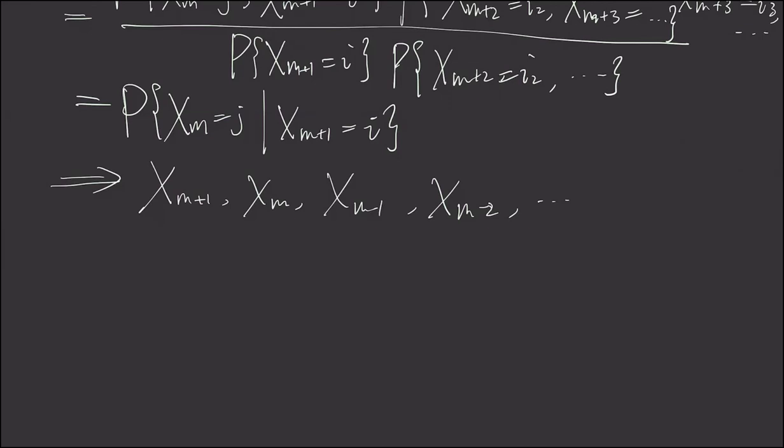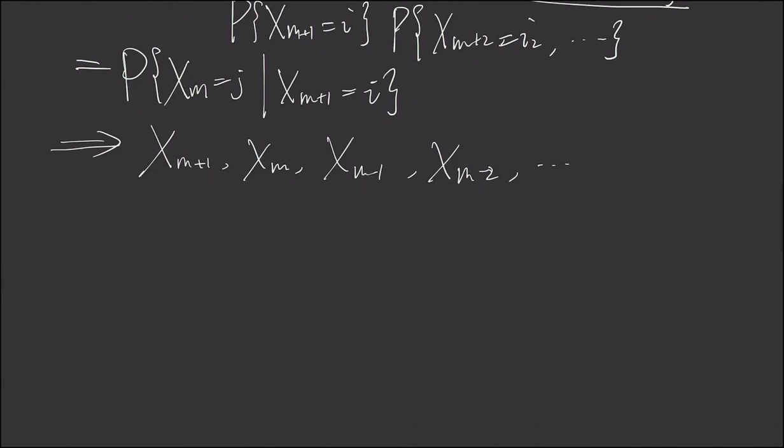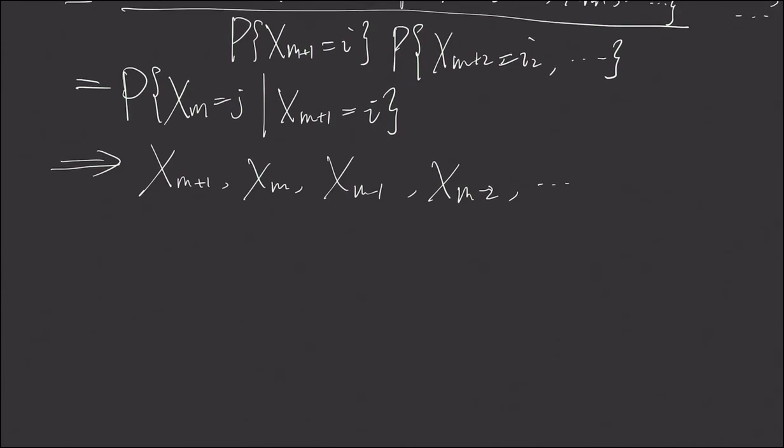In the previous video, we verified that a Markov chain going backward is still another Markov chain, given that we have a stationary ergodic Markov chain, also irreducible of course.